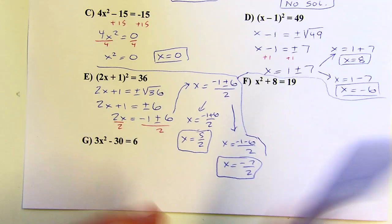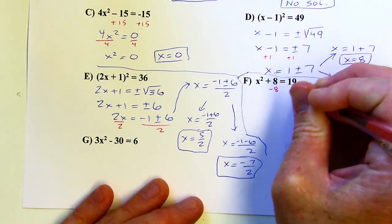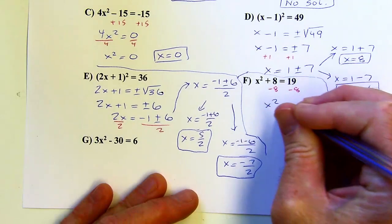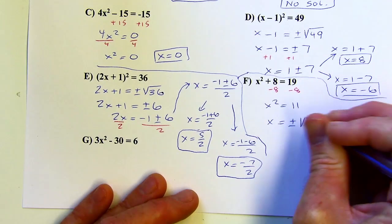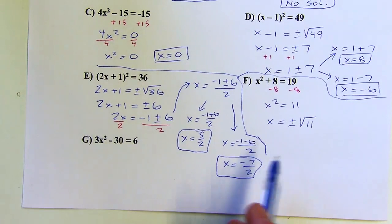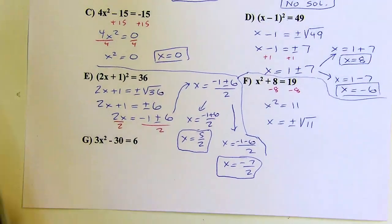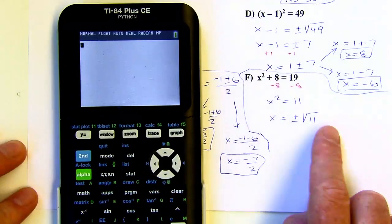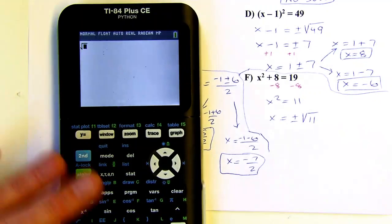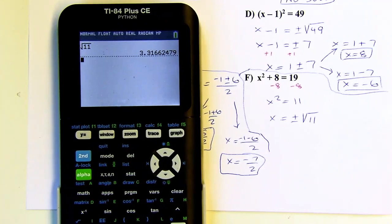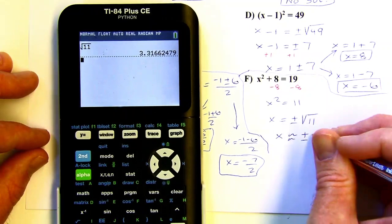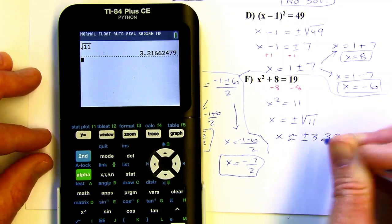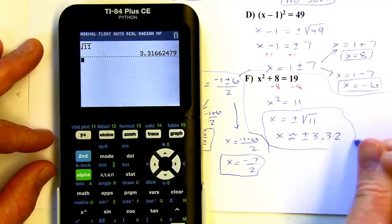Let's get x squared by itself — I'll subtract 8. x squared is going to equal 11. Now I'll take the square root of both sides. This is not a perfect square, so if you want a decimal, you could put it into a calculator and it's about 3.32. You could leave it as plus or minus root 11, or say approximately plus or minus 3.32, depending on how many decimal places you want.